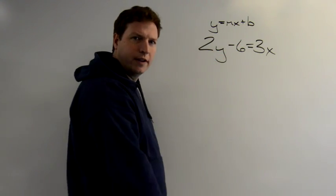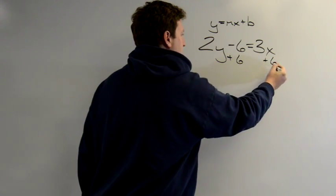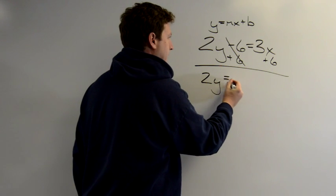So I really am just solving for y. I want to isolate this guy. So I'm going to add 6 to both sides of my equation. That's going to get my y over here by itself.